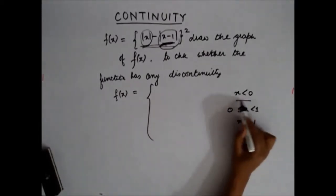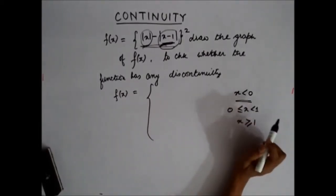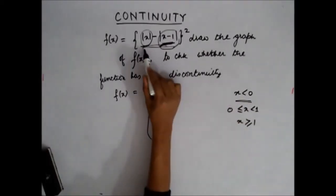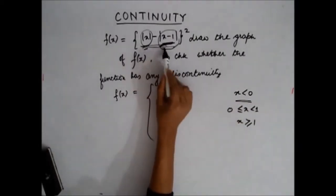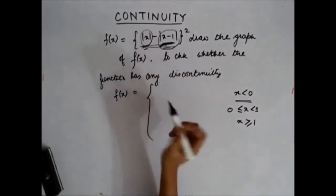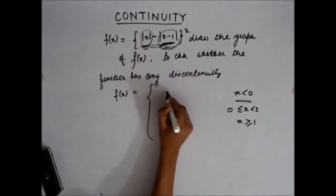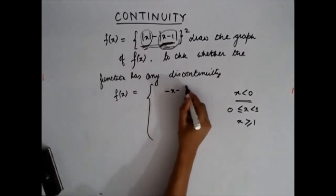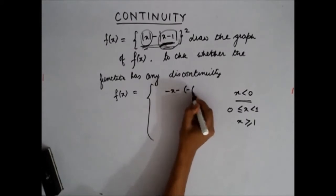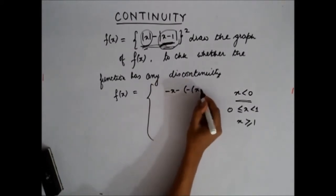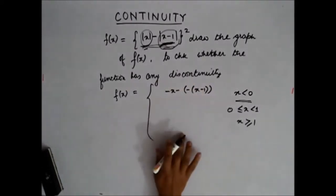When x is less than 0, x is a negative quantity and x minus 1 is also a negative quantity. So mod of x becomes minus x, and mod of x minus 1 becomes minus of x minus 1.